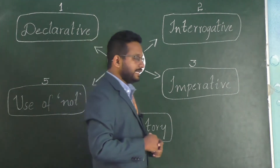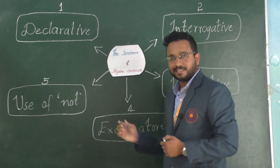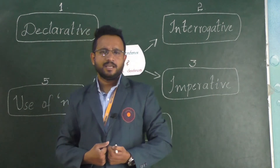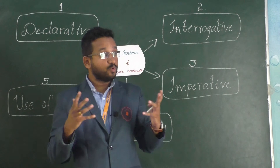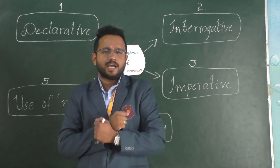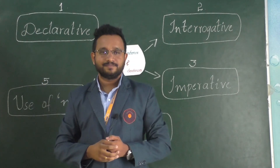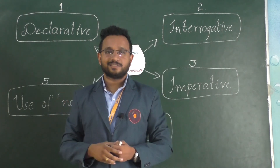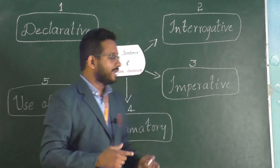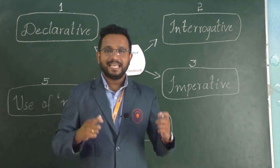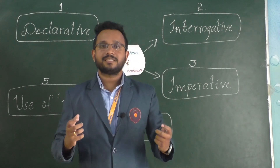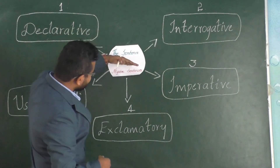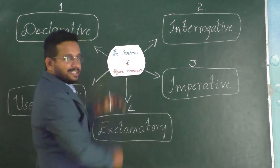Now let's see the fourth type: exclamatory statement. What is an exclamatory sentence? What a beautiful flower! How cold is tonight! What a terrible accident! These are exclamations — sudden expressions of feelings. An exclamatory sentence is a sentence that expresses some sudden feelings. Now we are going to come to the next point, that is negative sentences.